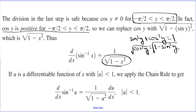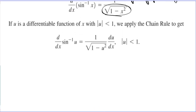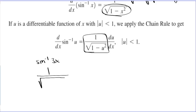If u is a differentiable function of x with the absolute value of u less than 1, we apply the chain rule. The derivative of inverse sine is 1 over square root of 1 minus u squared, times the derivative of the inside. For example, the derivative of inverse sine of 3x would be 1 over square root of 1 minus 9x squared, times 3. When you square u, the whole expression is squared — so 3x squared becomes 9x squared, not just 3x squared.